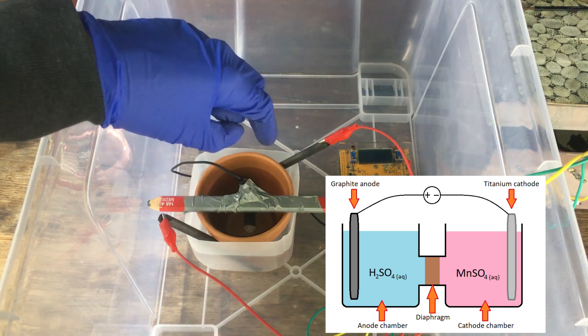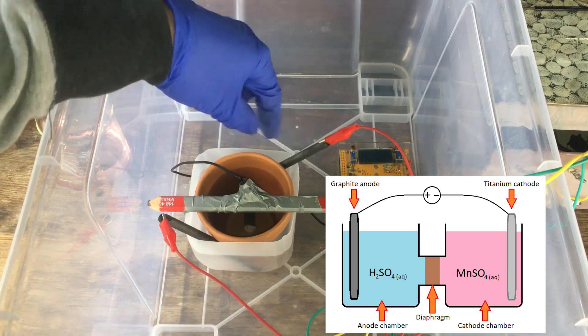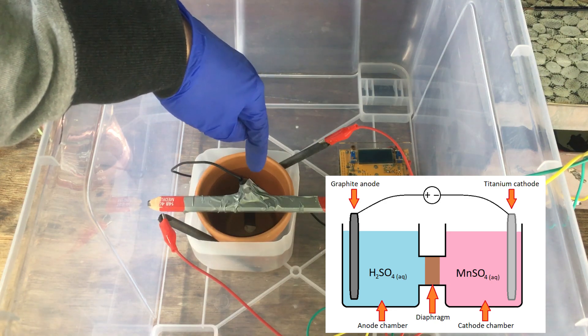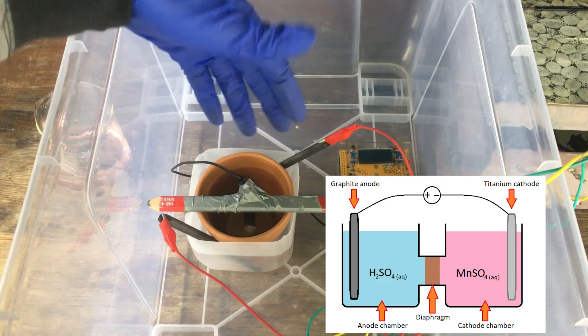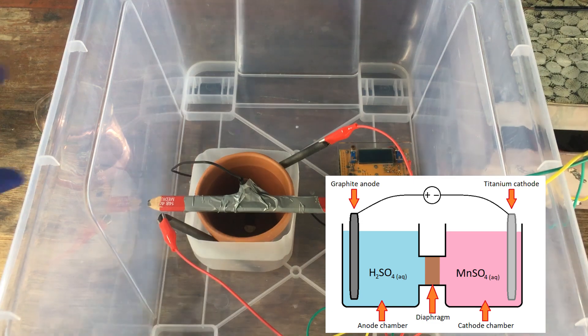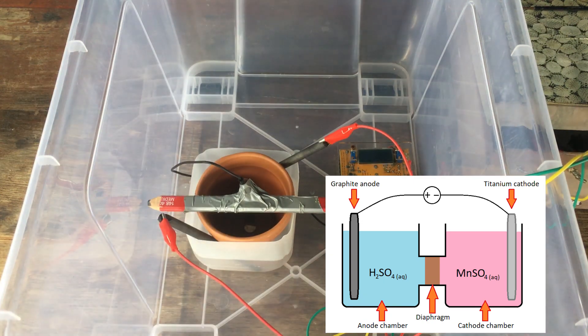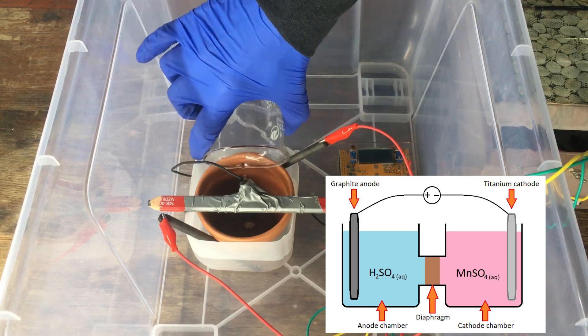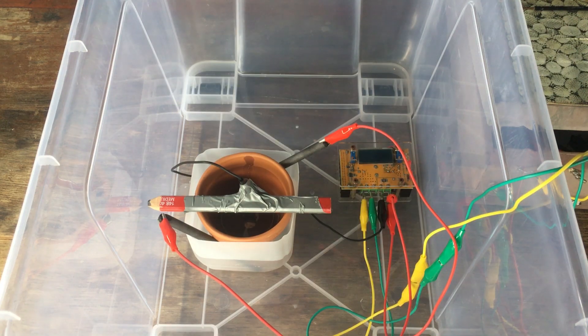This prevents manganese ions from being oxidized on the anode to form manganese dioxide, since we're only filling the cathode compartment with the manganese sulfate. So, adding the manganese sulfate solution now to the cathode compartment. And turning on our electrolysis.